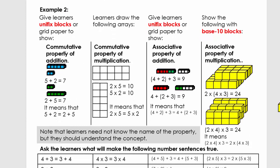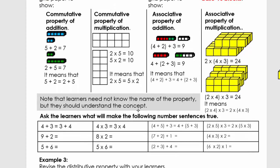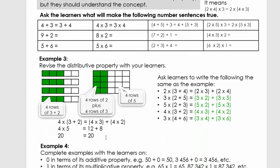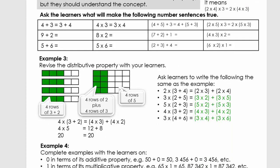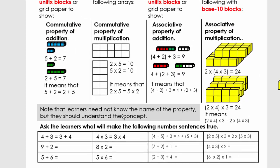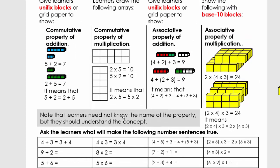With the properties of numbers we're going to look at the commutative property of addition, commutative property of multiplication, associative property of addition, associative property of multiplication, the distributive property of numbers, and then the additive property of zero and the multiplicative property of one. Please make sure that your learners or your children don't need to know these words — they just need to understand the concepts.